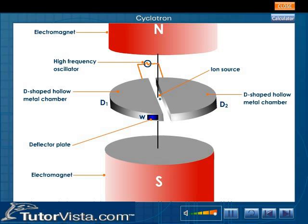Now let us understand the working of a cyclotron. The positive ions are accelerated into the negatively charged D due to electrostatic attraction.